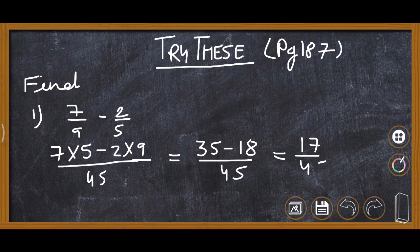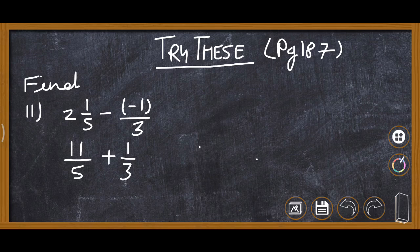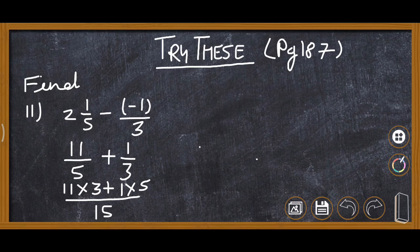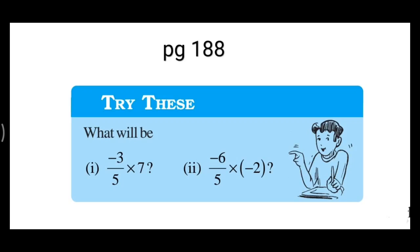So 35 - 18 = 17, and the answer is 17/45. For the second part, 2 and 1/5 is given as a mixed number. We convert it: 5×2 + 1 = 11/5, then minus minus gives plus 1/3. LCM of 5 and 3 is 15. So 11×3 = 33 and 1×5 = 5, giving 33 + 5 = 38/15.